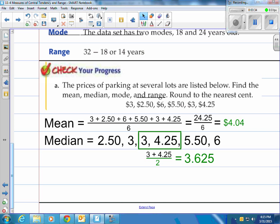And when we do that, we've got three plus four point two five divided by two, which is three point six two five. Now it says round to the nearest cent, so therefore I will take this and I'll round this to three point six three.